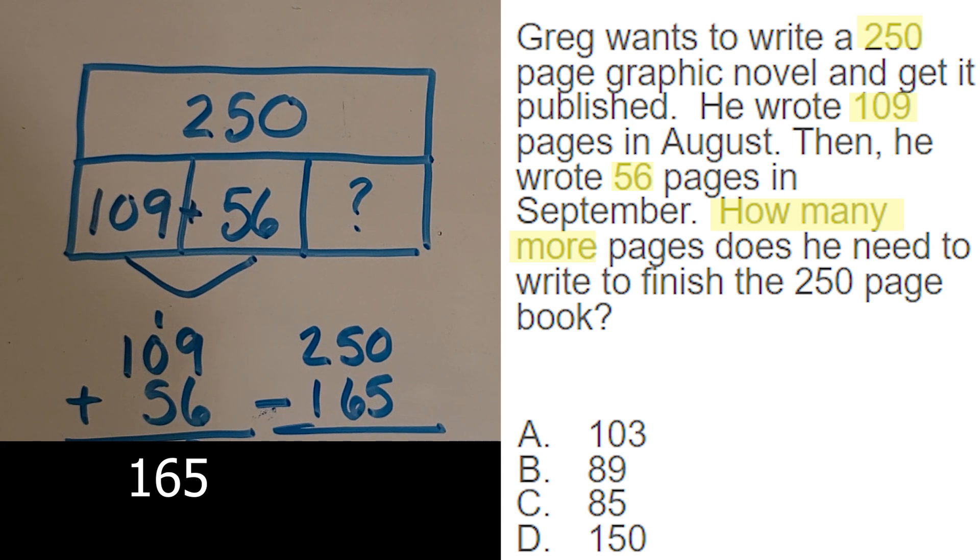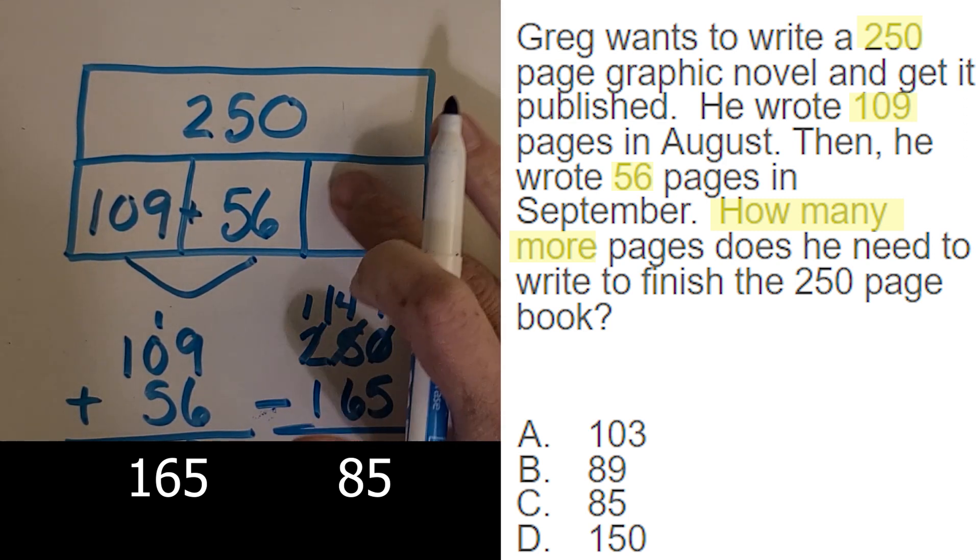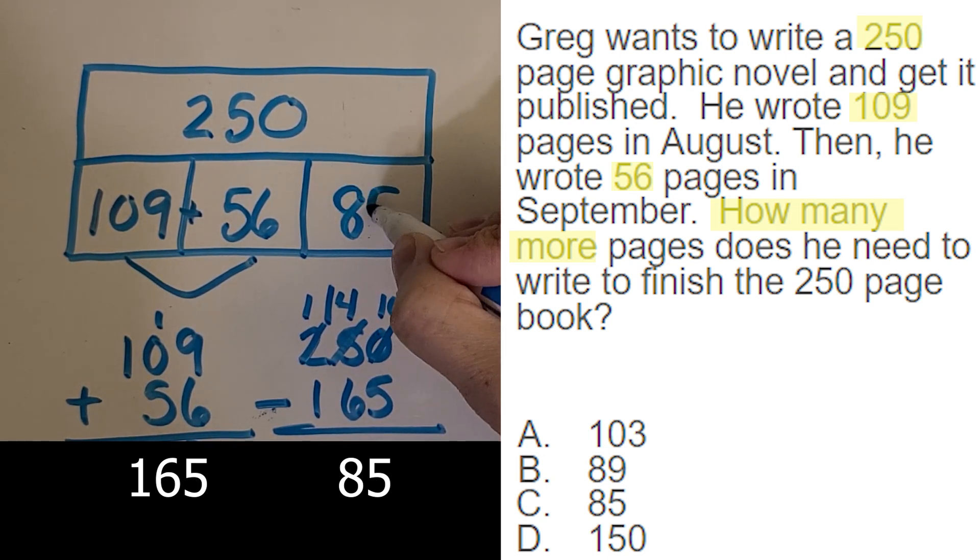And if you want to pause the video again, we can come back and check your work. Okay, so I see this zero here, which means I have to regroup. I'm going to come over here and take a 10, and it makes 10 ones. Okay, subtract here. I've got to do it again. I'm going to take a 100 and it makes 10 more tens. 14 minus six is eight. And one minus one is zero or nothing. I'm going to leave that blank there. So that means he needs to write 85 pages to get all the way up to the 250.